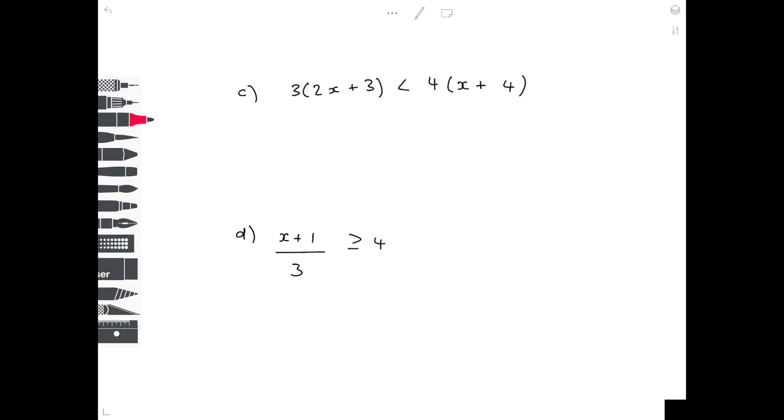Last two examples now. So in our first example c we need to multiply out those brackets. So that becomes 6x plus 9 is less than 4x plus 16. Let's take away 4x from both sides to get 2x plus 9 is less than 16. Take away 9 from both sides to get 2x is less than 7. And then lastly divide by 2. So your final answer is that x has to be less than 3.5.